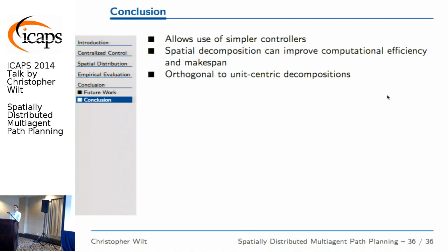Thank you. [Question from audience]: You mentioned makespan, but how well does this do to minimize the average wait time for any individual unit? [Answer]: It works fairly well. If you just take the sum of all travel times without including waiting at the goal, it looks basically the same as makespan in terms of how the plot looks.